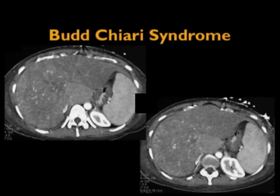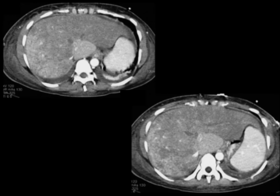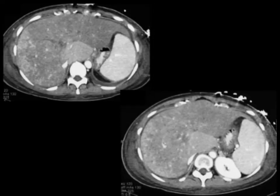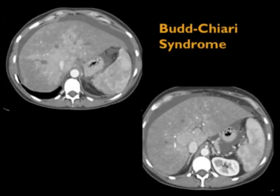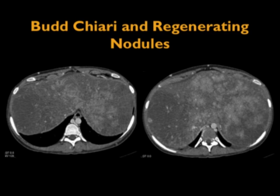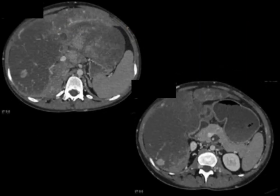Here's a beautiful example of Budd-Chiari: prominent enhancing caudate lobe, central increased density, peripheral decreased density. Going from arterial to venous phase, now the periphery is bright and the central is low density. You don't see the hepatic veins — a very nice example. And here are more images showing the flip-flop phenomenon and perfusion changes. Another case shows central bright enhancement with a mottled pattern, and this patient has multiple nodules — probably best seen on the venous phase acquisition.